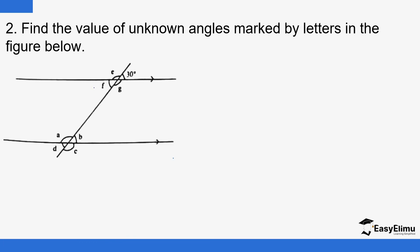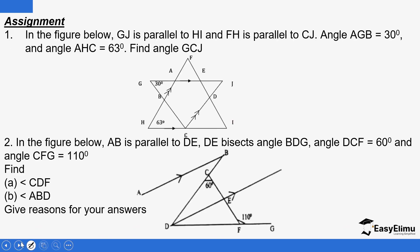The same applies to this example. This is 30 degrees, this is also 30 degrees — vertically opposite. 30 degrees here, this is 150 — angles in a straight line. 150 here. This is also 30 because this is 30. This 150 corresponds to A here, and this is also 150 — vertically opposite. So the three properties can be used at the same time to help you find the angles.